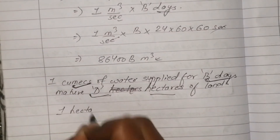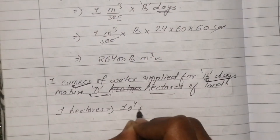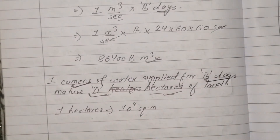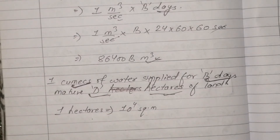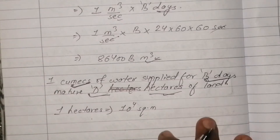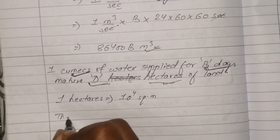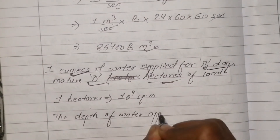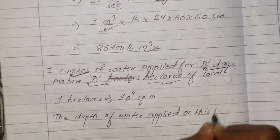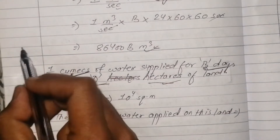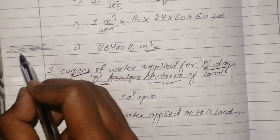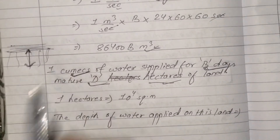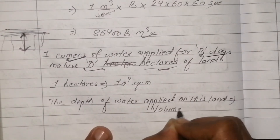1 hectare equals 10⁴ square meters, so the area is D × 10⁴ m². The depth of water applied on this land equals volume divided by area. Therefore, depth equals 86400 × B divided by (D × 10⁴).